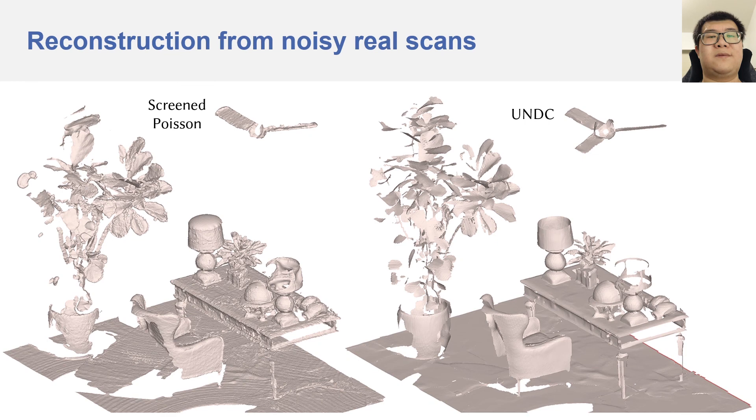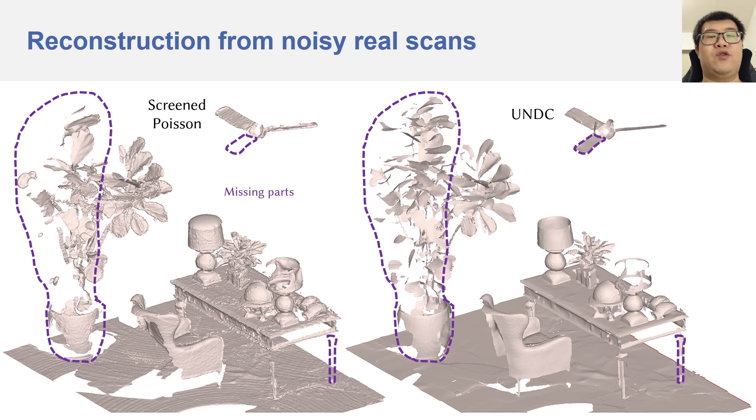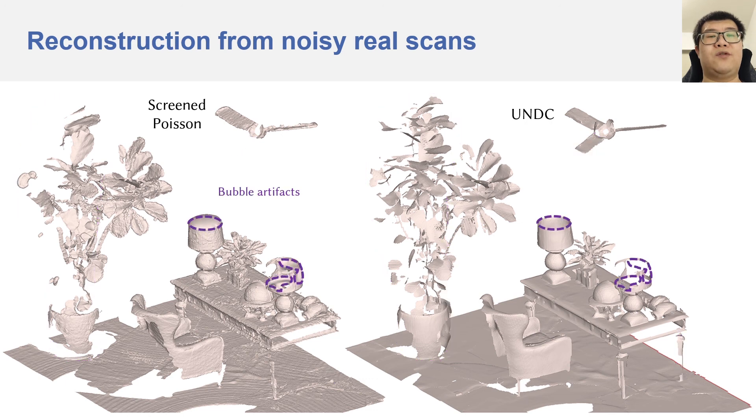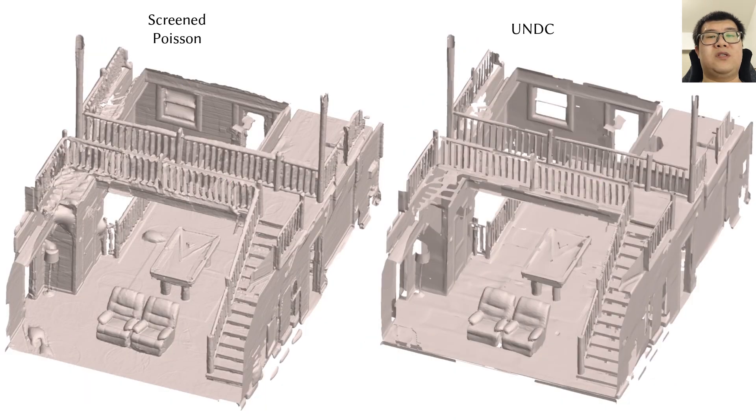Finally, in the last experiment, we reconstruct meshes from raw scan data and compare with screened Poisson. Notice how Poisson tends to produce noisy surfaces. Poisson may also trim the parts incorrectly and may not be able to reconstruct thin structures. Poisson can also generate bubble artifacts because of its watertight nature. Here is another scene with the most artifacts.